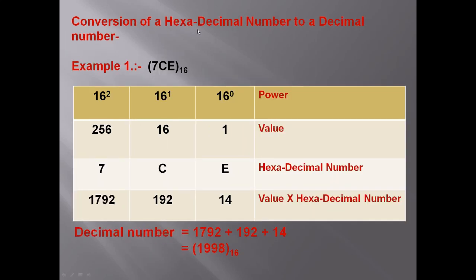Next is hexadecimal to decimal conversion. When converting a hexadecimal number, first we write the powers of 16. There are three digits, so we make three columns and write: 16 power 0, 16 power 1, and 16 power 2. If there were a fourth digit, we would write 16 power 3.